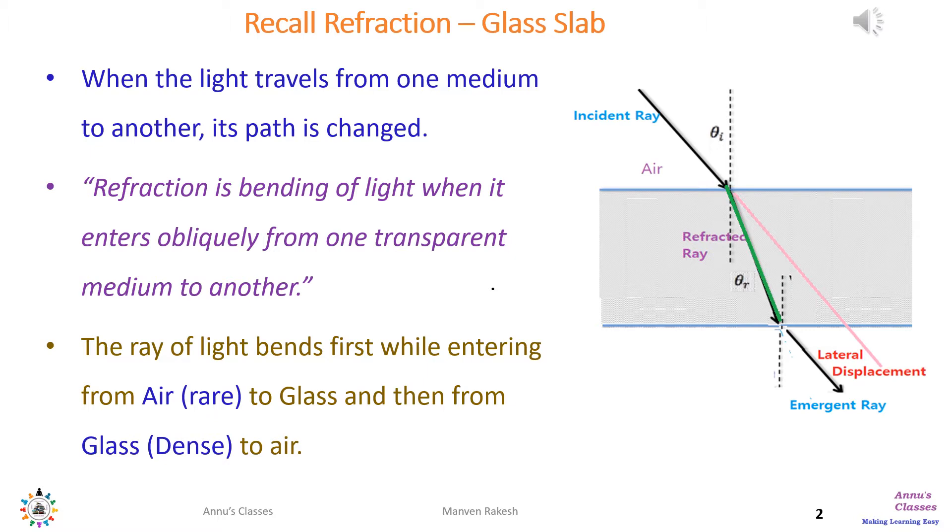Light travels on a straight path, but when light changes from one medium to the other medium, its path bends slightly. The bending depends on whether it is moving from rare medium to denser or denser medium to rare.